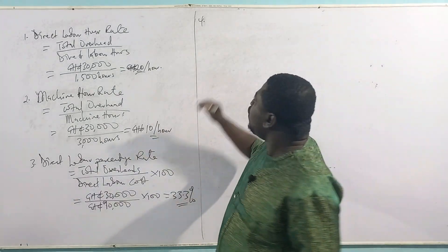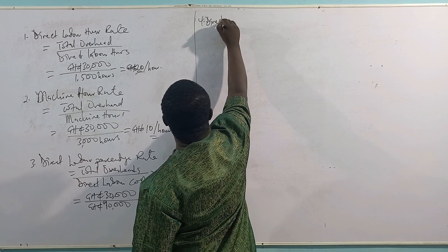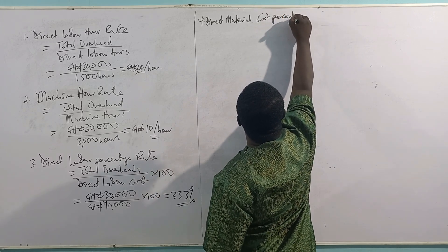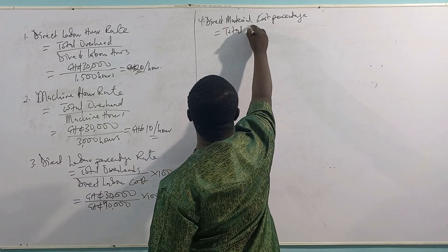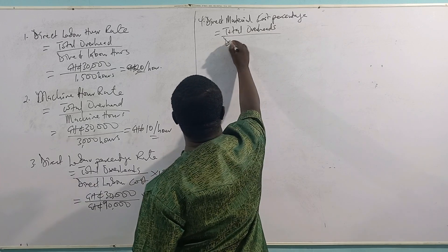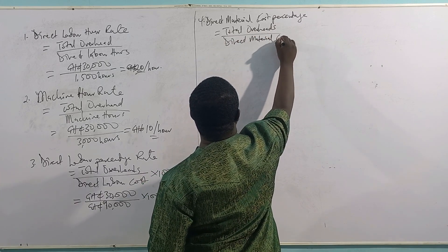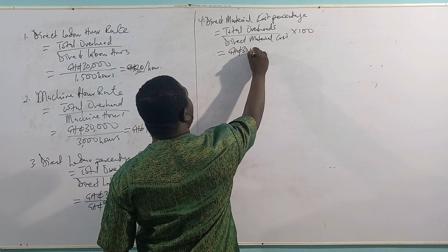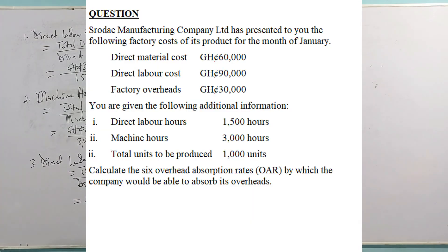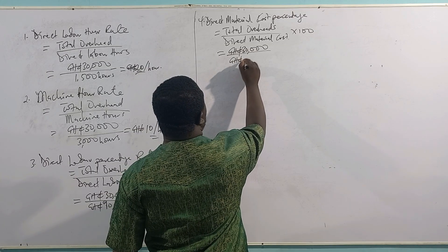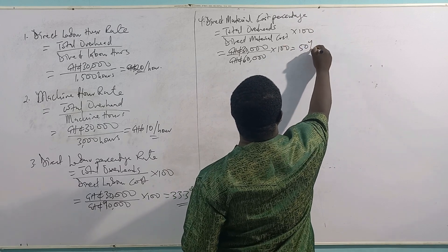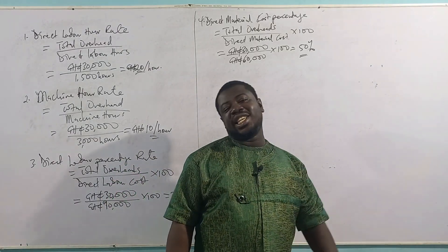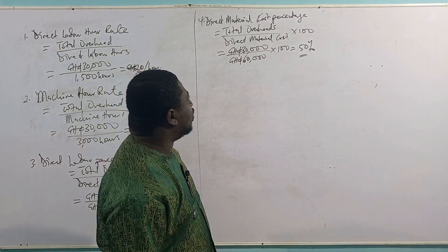Moving to the fourth formula — direct material cost percentage rate. The formula is: total overhead ÷ total direct material cost × 100. Not the hours, the costs. The total overhead is 30,000 Ghana cedis, and the total direct material cost from the question is 60,000 Ghana cedis. So 30,000 ÷ 60,000 × 100 = 50%. The direct material cost rate is 50%, which is half. This is as easy as ABC.